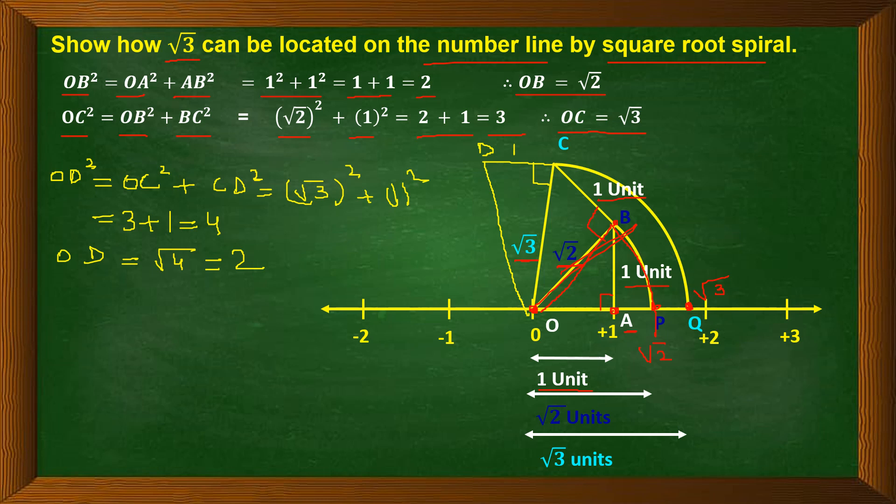Note that 2 is a point already marked on the number line. So OD = √4 = 2, and point R corresponds to √4 on the number line.